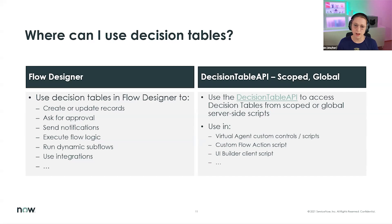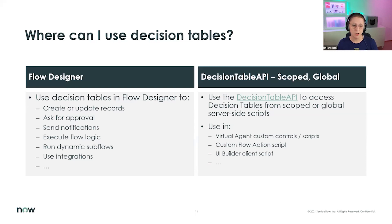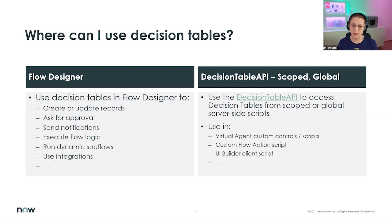The second path is the Decision Table API, which can be used scoped or global. You can use it to create a custom control for Virtual Agent to get a decision before continuing a conversation, create a custom flow action script, use it in UI Builder client scripts, or any other script field. This will make your scripting life easier as well. We'll also preview other spaces where decision tables could be used going forward.